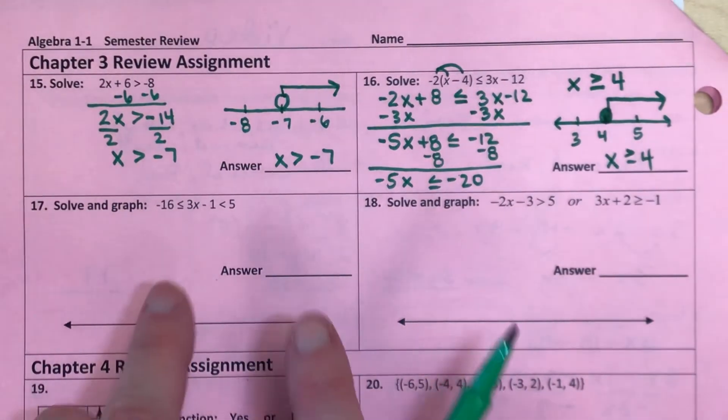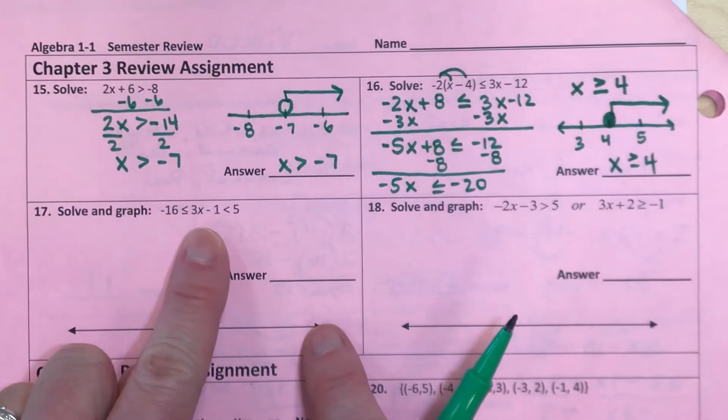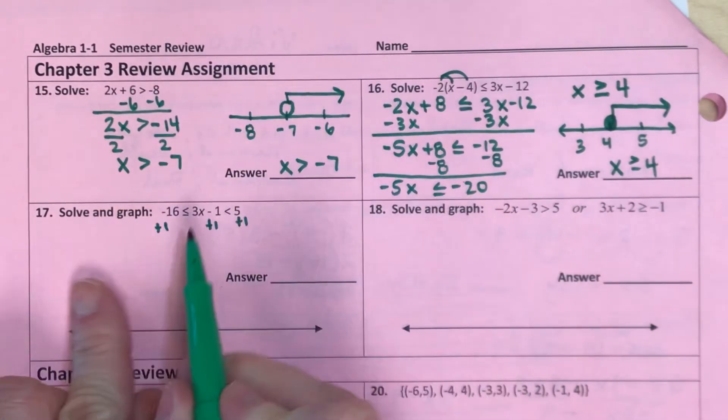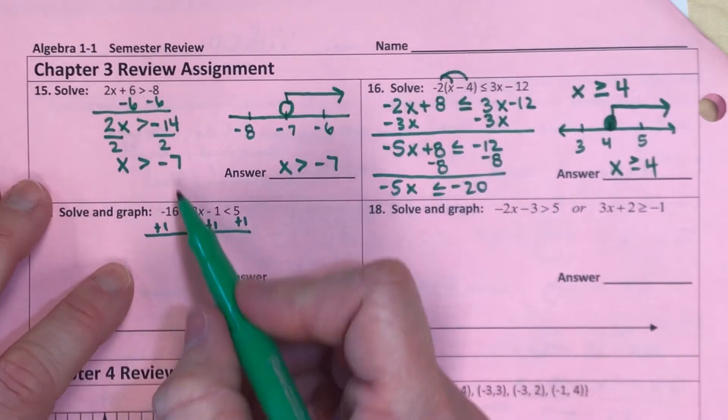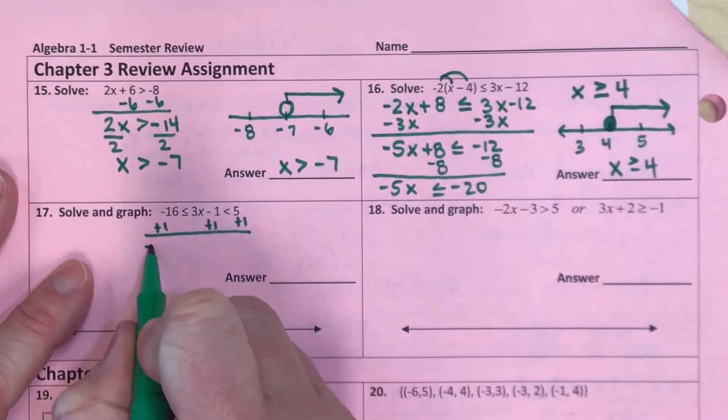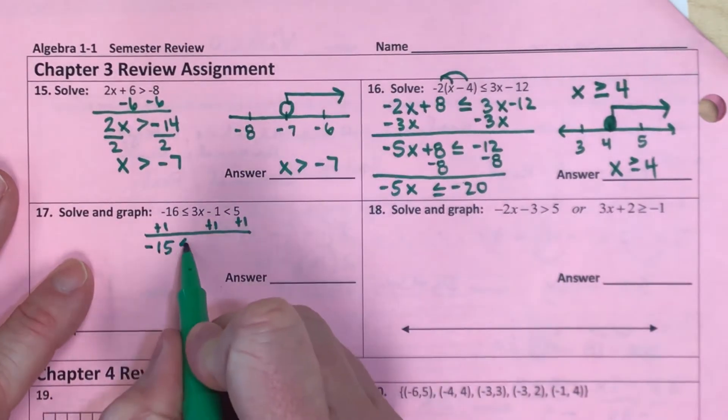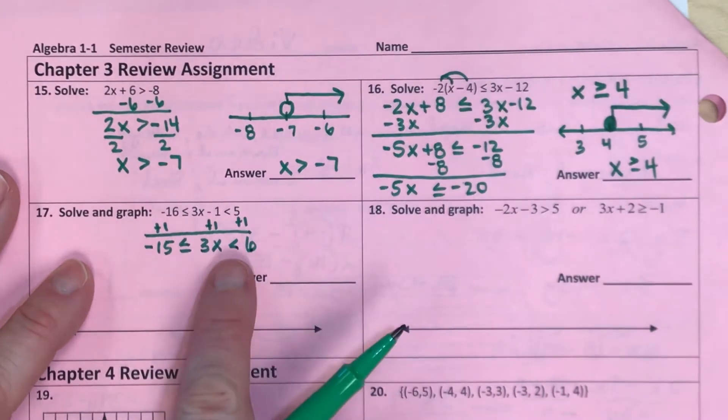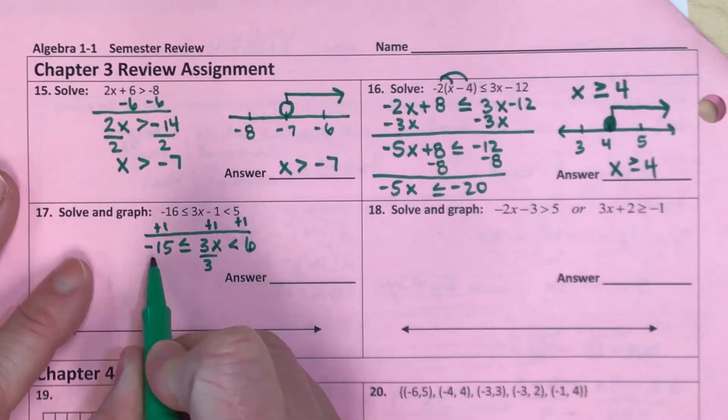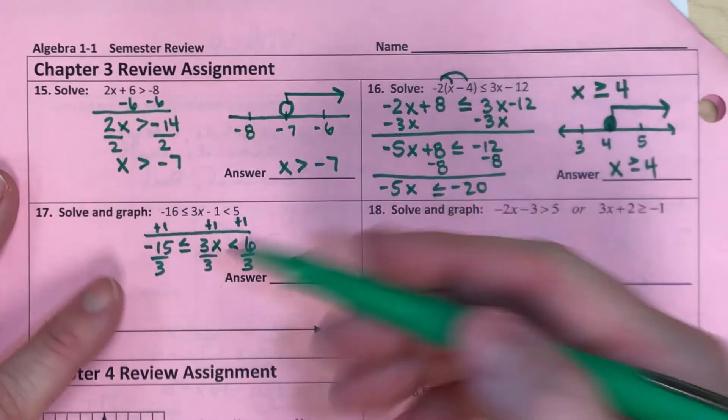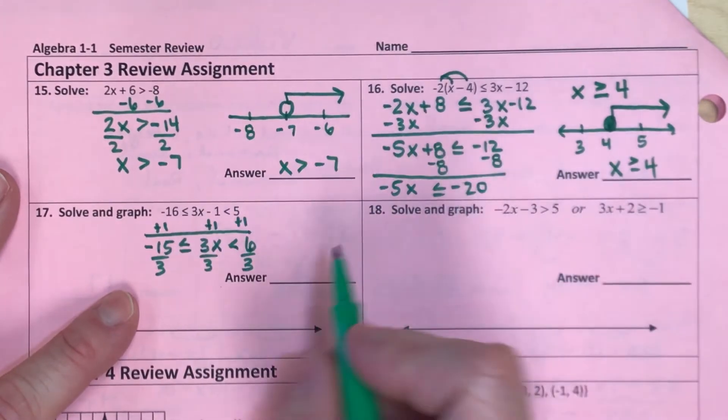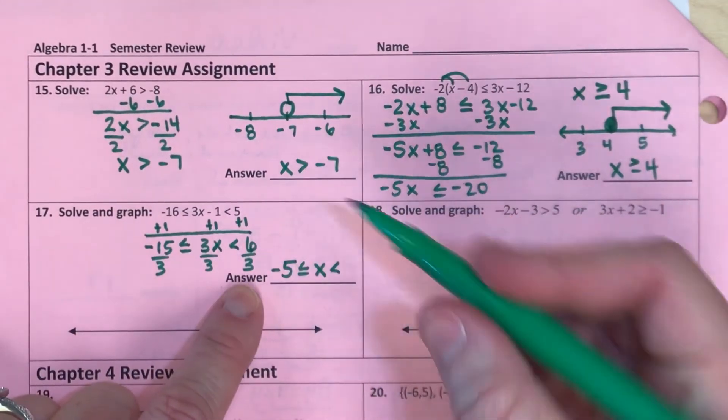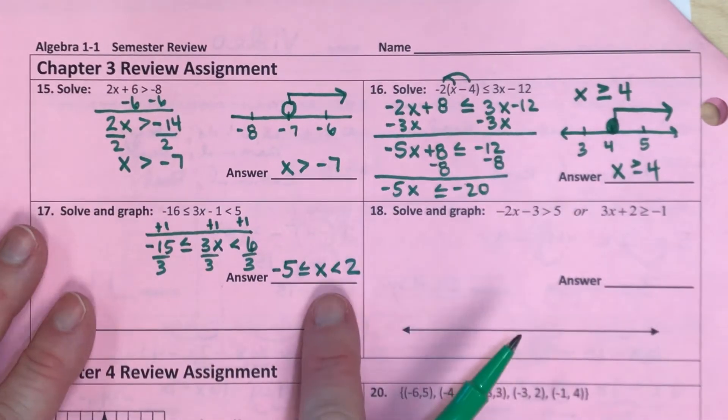Now for number 17, notice how your x is in between two inequality symbols. So what you're going to want to do is add 1 and solve for x in the middle. And you want to solve to both sides. So we're going to take negative 15 plus 1, which will get us negative 15. And less than or equal to, now 3x in the middle, less than or equal to 6. Actually, just less than, not equal to for that symbol. And now if I divide by 3, I need to do that on both sides. So let's simplify here. Negative 15 divided by 3 is negative 5. That's less than or equal to x. Less than symbol here. 6 divided by 3 is 2. So this is my compound inequality.